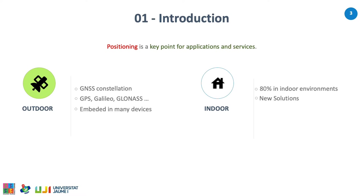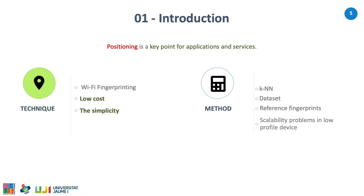The user position is a key point for many current applications and services, while GNSS like GPS or Galileo receivers are embedded in modern smartphones providing position outdoors. GNSS denied scenarios such as indoors, where humans spend more than 80% of their lifetime, require other solutions. Wi-Fi fingerprinting is a popular technique for position estimation due to its low deployment cost and the simplicity of the positioning algorithm. The user position can be computed using the k-nearest neighbor algorithm and a dataset with reference fingerprints taken at known positions.